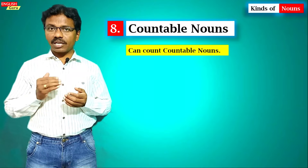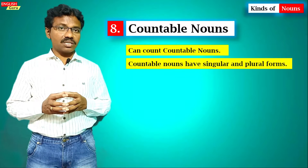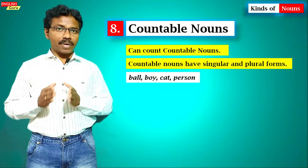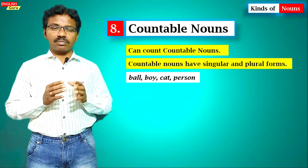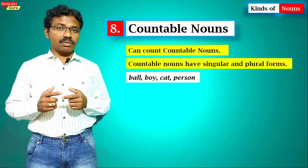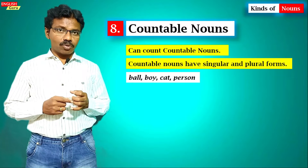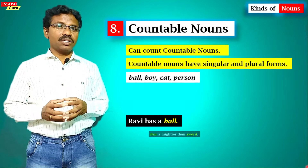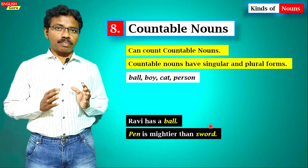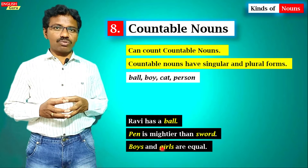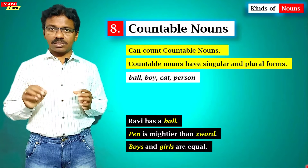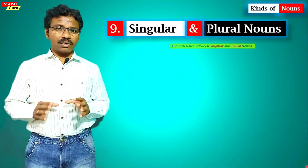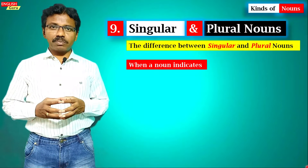The eighth kind is countable nouns — nouns we can count with numbers one, two, three. They have both singular and plural forms: ball/balls, boy/boys, girl/girls. 'Ravi has a ball' — 'ball' is countable; we can also say three, four, or five balls. 'Pen is mightier than sword' — 'pen' and 'sword' are countable nouns. 'Boys and girls are equal' — 'boys' and 'girls' are countable nouns.